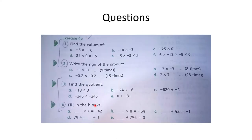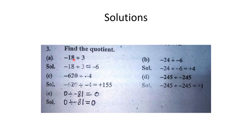Ek dafa phir repeat karta hoon Question 3. Find the quotient: A part minus 18 divided by 3 — 3 sixes are 18, answer minus 6. B part minus 24 divided by minus 6 — minus minus plus, 6 fours are 24, answer plus 4.